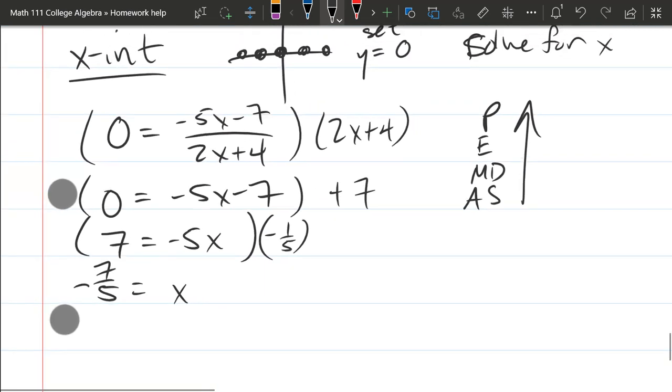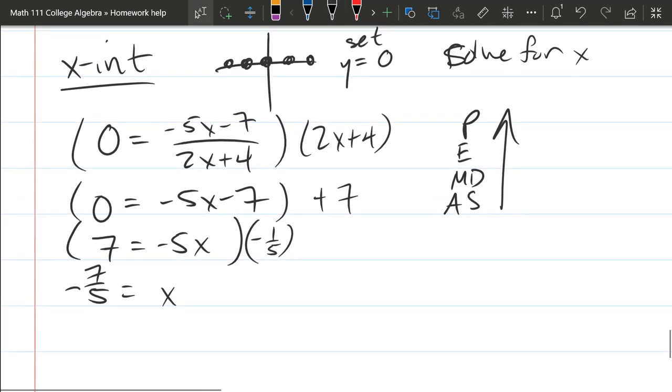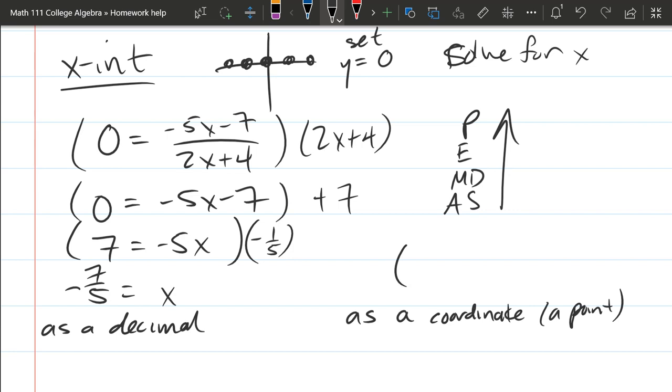So that's your x-coordinate of your x-intercept. If they want a decimal, this is the decimal. Same information as a coordinate, also known as a point. You're going to state the x and the y-coordinate. So the x-coordinate is negative seven-fifths, just like before.